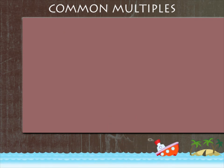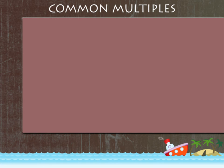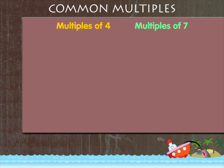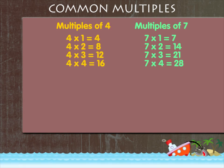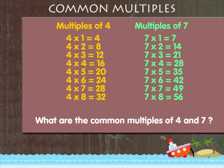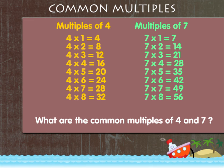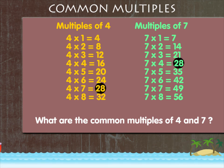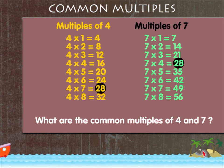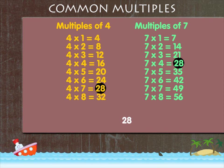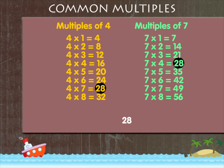Let's now look at the multiples of 4 and 7. Here they are. What are the common multiples here? 28 is the only one you can see. So, 28 is the common multiple of 4 and 7.